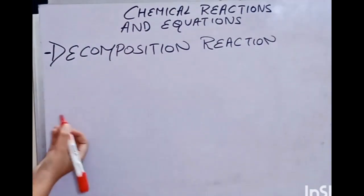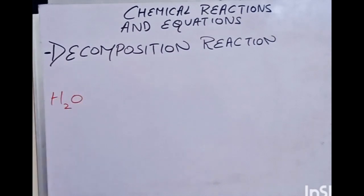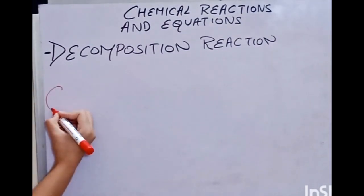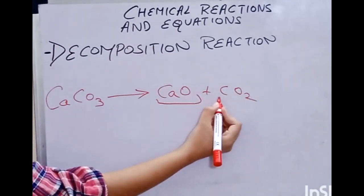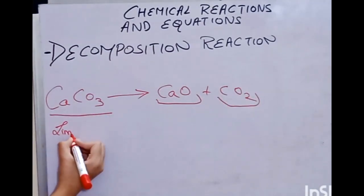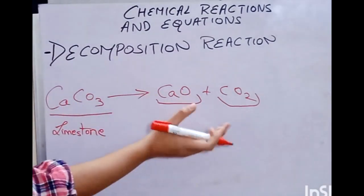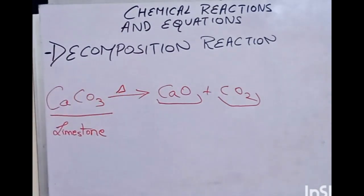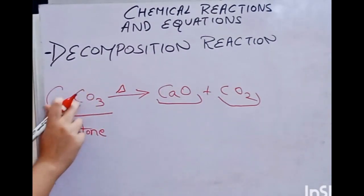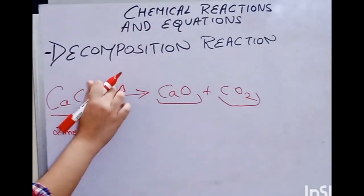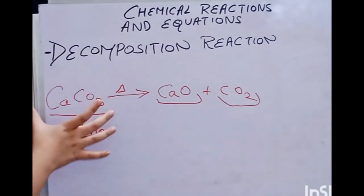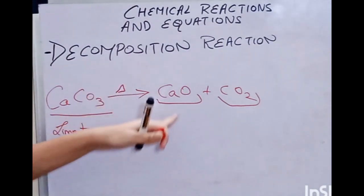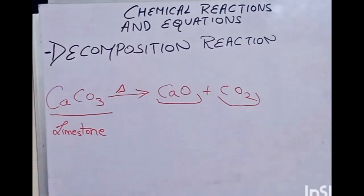For example, CaCO3 breaks down to give CaO plus CO2 — quicklime and carbon dioxide from limestone, or calcium carbonate. This breakdown happens with the help of heat. Calcium, carbon, and oxygen are joined together with the help of a bond, and when we give heat to the bond, the bond breaks. Since there is only one reactant, we need heat for it to break down in a chemical reaction.